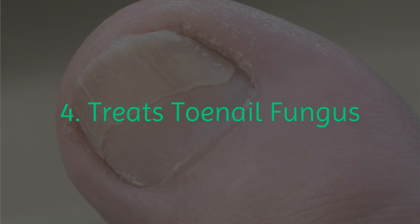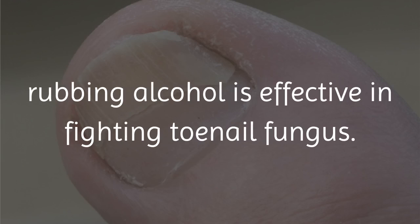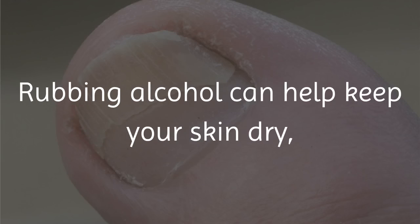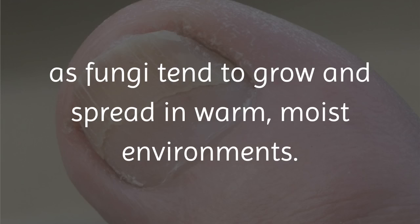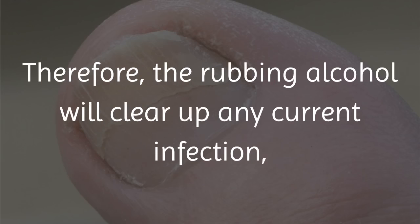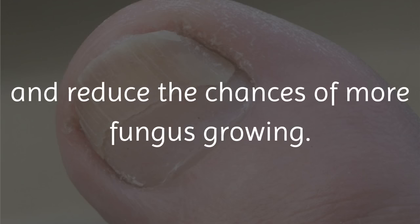4. Treats Toenail Fungus. Because of its ability to fight germs and infections, rubbing alcohol is effective in fighting toenail fungus. It can help keep your skin dry, which prevents fungus from growing in the first place, as fungi tend to grow and spread in warm, moist environments. The rubbing alcohol will clear up any current infection, give you relief from any pain and discomfort, and reduce the chances of more fungus growing.